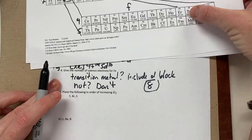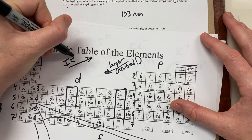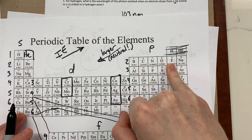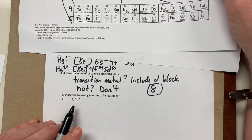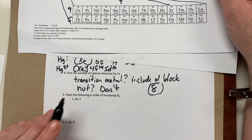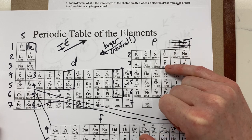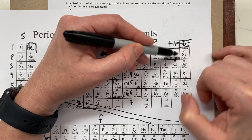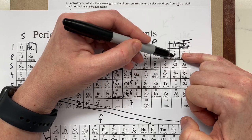Place the following in order of increasing ionization energy. The general trend is that ionization energy increases up and to the right. Fluorine has a very high ionization energy — it's the highest here. Then sulfur is closer to fluorine, and bromine is farther away. So the order of increasing ionization energy is: bromine, then sulfur, then fluorine.